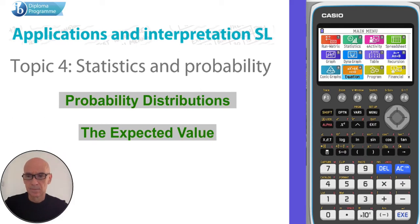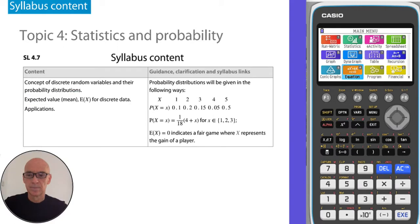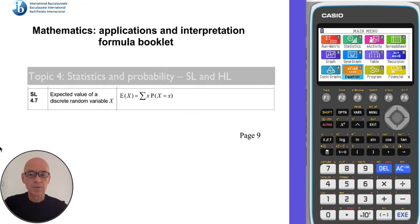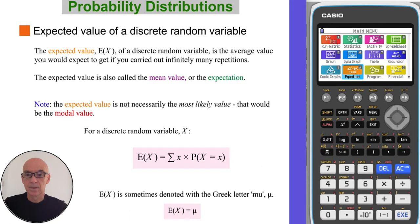Hello. Today I'm going to talk to you about probability distributions, specifically how to calculate the expected value, as shown in the syllabus. The formula for the expected value is given on page nine in your formula booklet. The expected value of a discrete random variable is the average value. It's also called the mean value, or the expectation, and sometimes denoted by the Greek letter mu. I'll show you at the bottom.